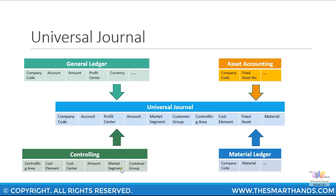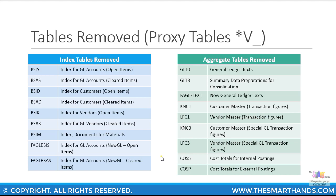Profitability analysis segments like market segment, customer group, and whatever other profitability segments you have will also get copied over to the universal journal. Another major difference between SAP ERP and SAP S/4HANA is the removal of tables such as index tables, aggregate tables, and some line item tables.